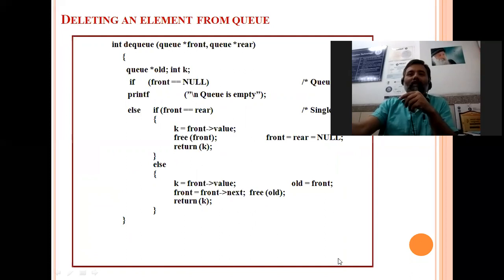Suppose we want to delete from the linked list. The arguments will be front and rear pointers. We are taking a pointer old and a variable key of data type integer.